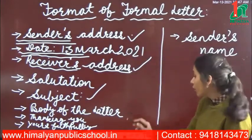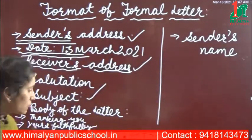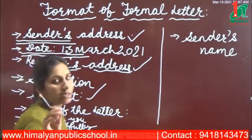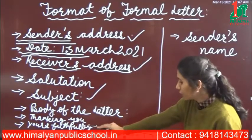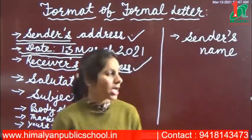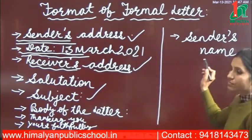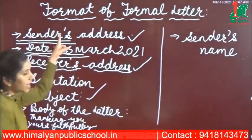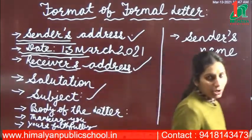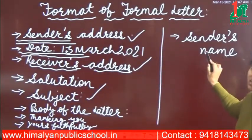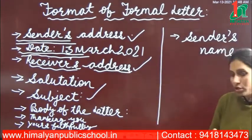The body of the letter is written in 3 to 5 paragraphs, but usually three paragraphs is sufficient. At the end, 'Thanking you' will come, then 'Yours faithfully', and then your sender's name to complete the letter. The sender's name is the same person whose address was written at the top — so if I am writing to my principal, my name appears at the bottom.